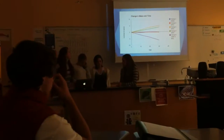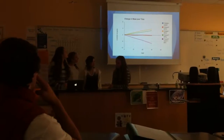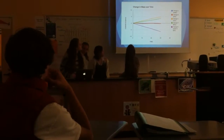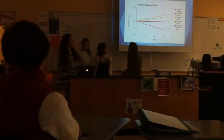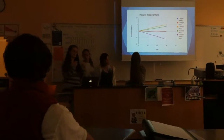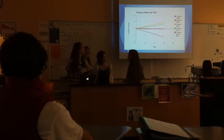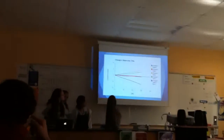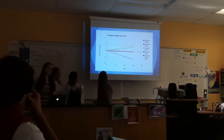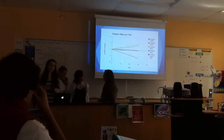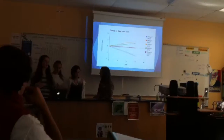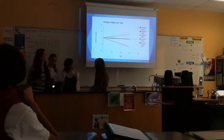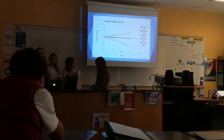Here is our graph for change in mass over time. Blue is the change in cell A, which contained water within water. Red is the change in cell B over time — B and A were very close and overlapped — cell B had 20% glucose inside and water on the outside. Orange was the change in cell C, which had 50% glucose within water. Green was the change in cell D, which had 80% glucose within the cell inside water. And then we had the change in cell E, which was the opposite of D, with water on the inside but 80% glucose on the outside.